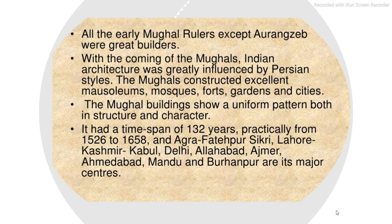The Mughal buildings show a uniform pattern, both in structure and character. It had a time span of 132 years, practically from 1526 to 1658. Major centres include Agra, Fatehpur Sikri, Lahore, Kashmir, Kabul, Delhi, Allahabad, Ajmer, Ahmedabad, Mandu and Burhanpur.